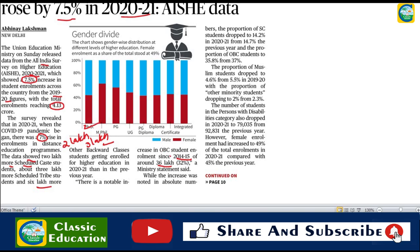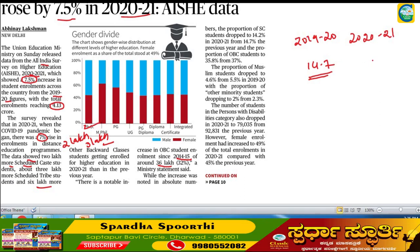The absolute numbers and proportional data are both important here. While the numbers have increased, we need to compare the proportions carefully. The proportion of enrollment across categories shows variation. The data covers around 70 families of institutions.